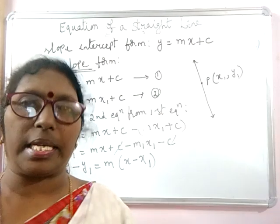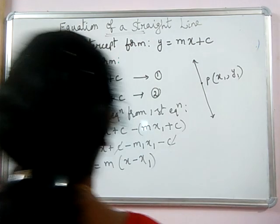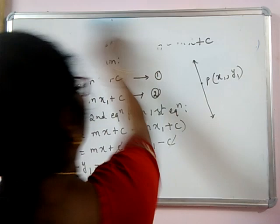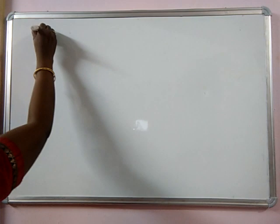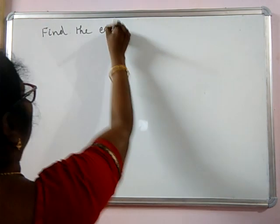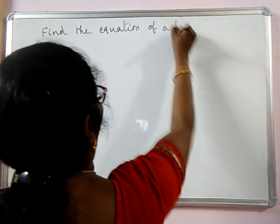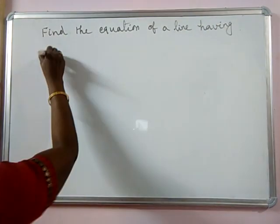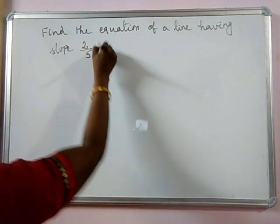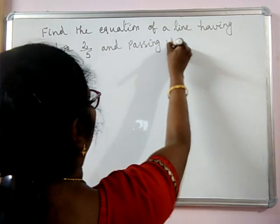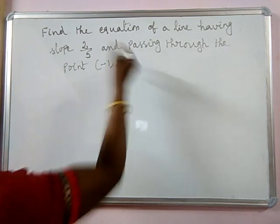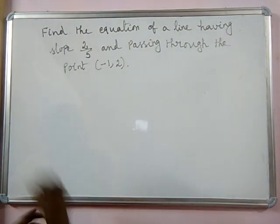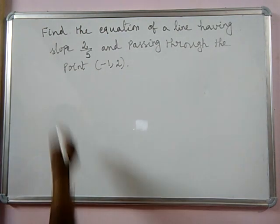Let me explain this with one example based on this formula. Find the equation of a line having slope 2/5 and passing through the point (−1, 2). The slope of the line is given and the coordinates of the point are given; you have to find the equation of the line.